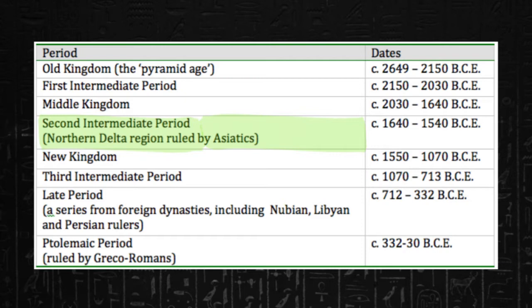Periods marked by strong, central, stable governments are called kingdoms, and those in which there wasn't a central government or where the region was politically fractured are called intermediate periods. Our story takes place in the Second Intermediate Period, somewhere between 1700 and 1500 BCE. This period was preceded by the Middle Kingdom and followed by the New Kingdom.